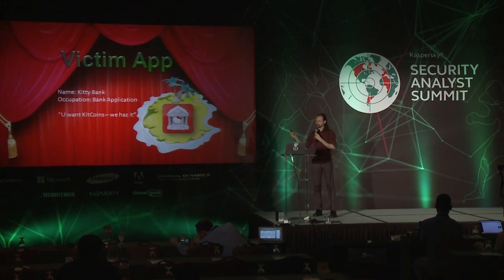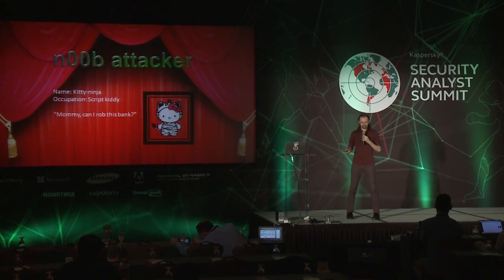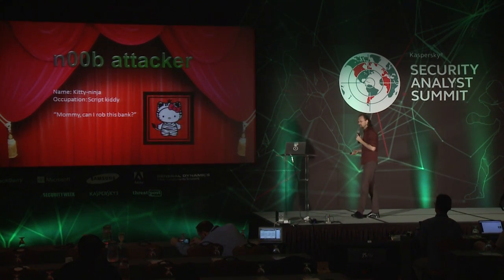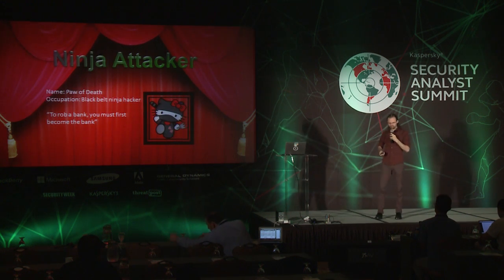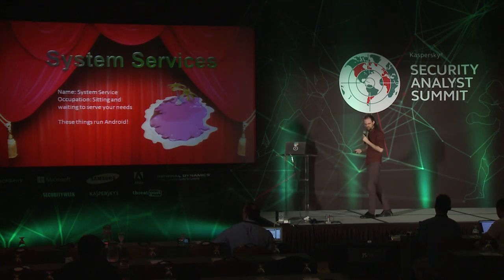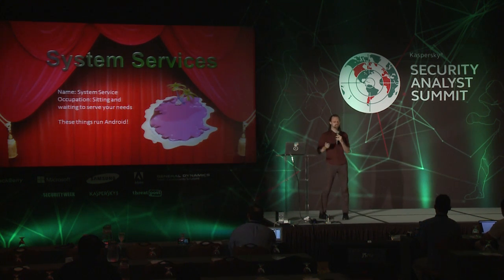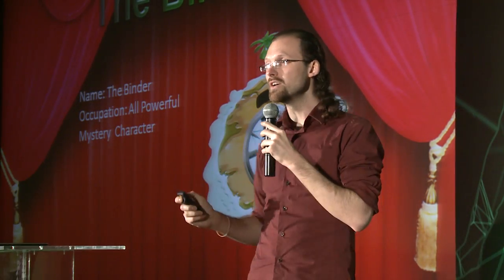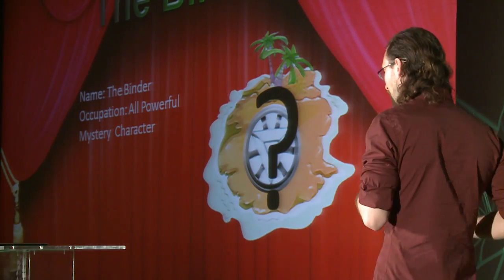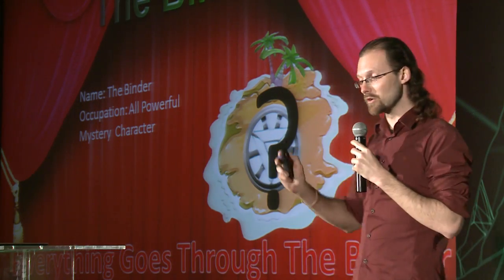Our victim app: your average banking app. The noob attacker — just an average script kiddy who wants to steal your money. The paw of diff: our lead hacker attacker who knows how Android works. The system services — we'll see why they're important in a second. And like in every good thriller, there's a mystery character: the binder. Spoiler alert — everything goes through the binder.